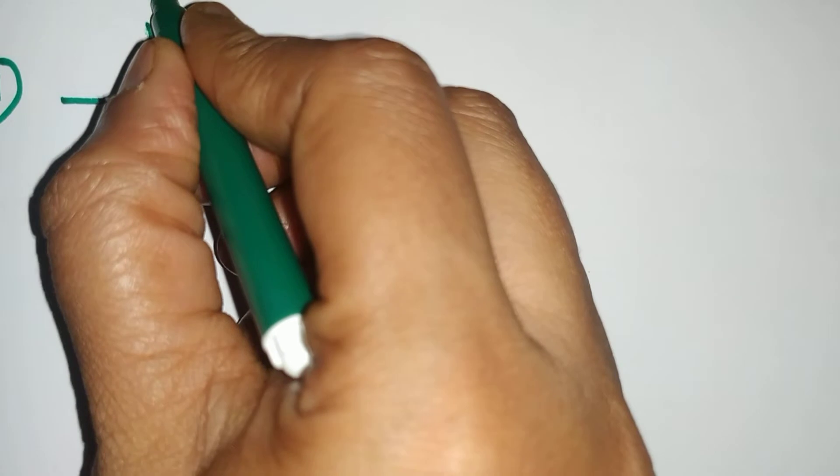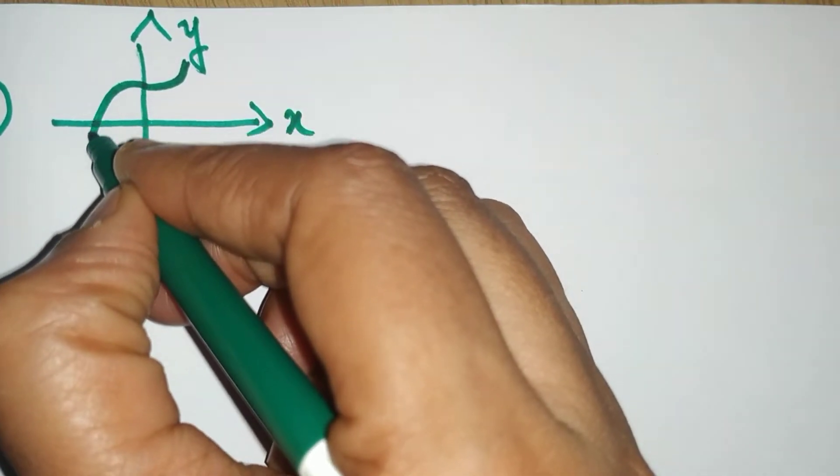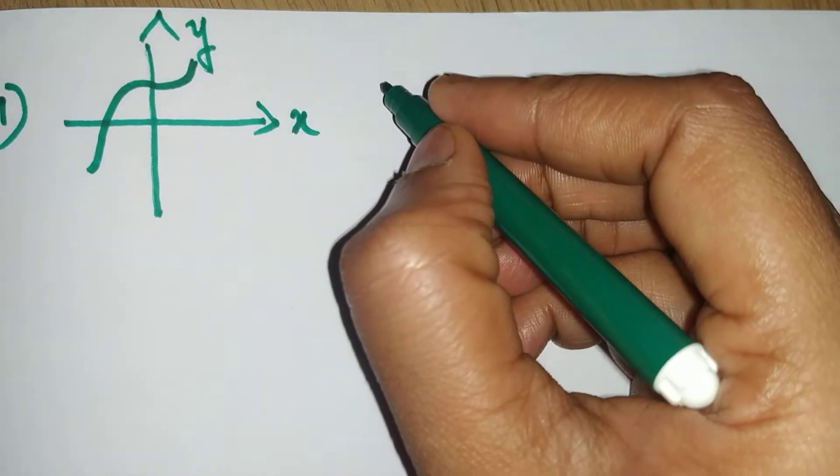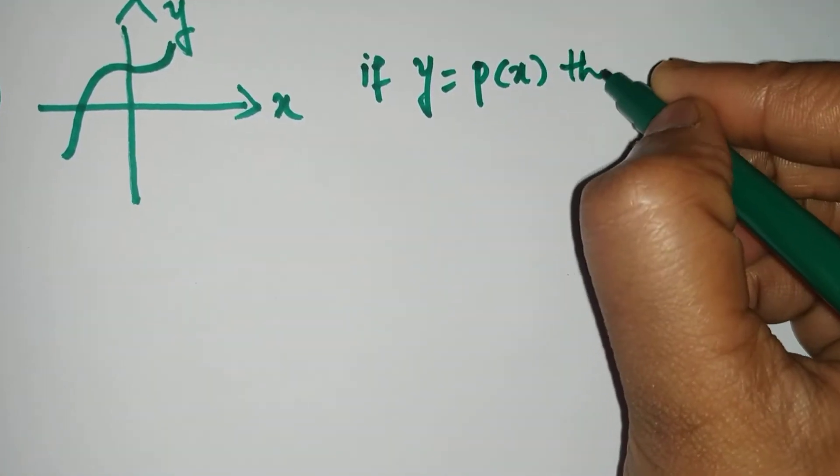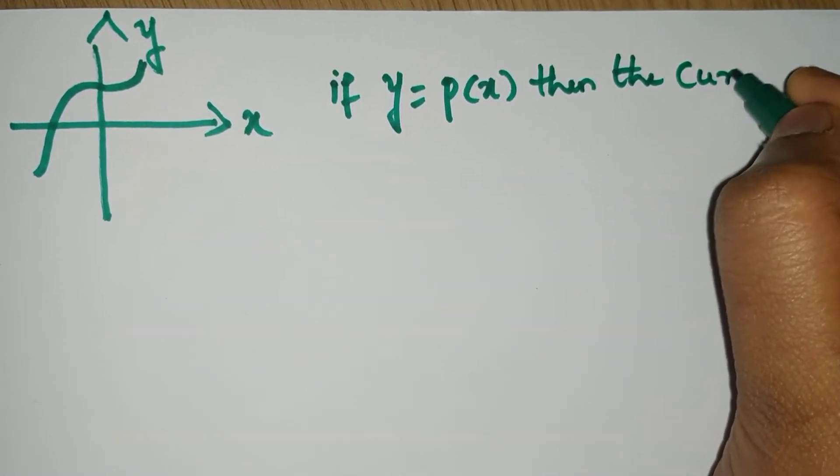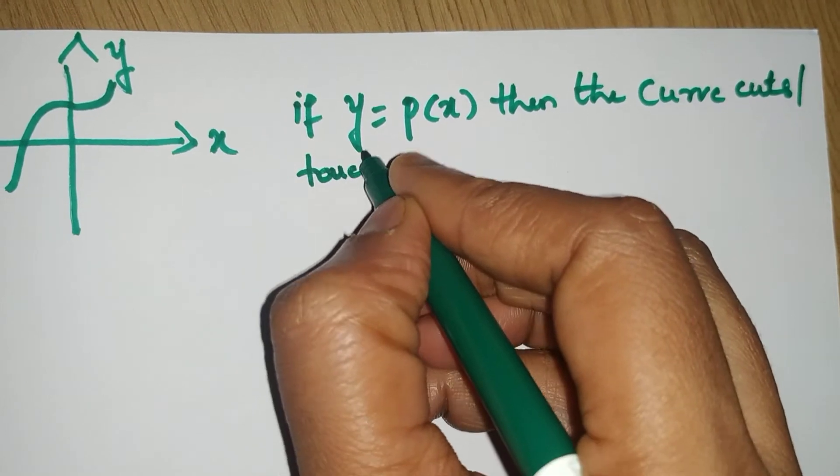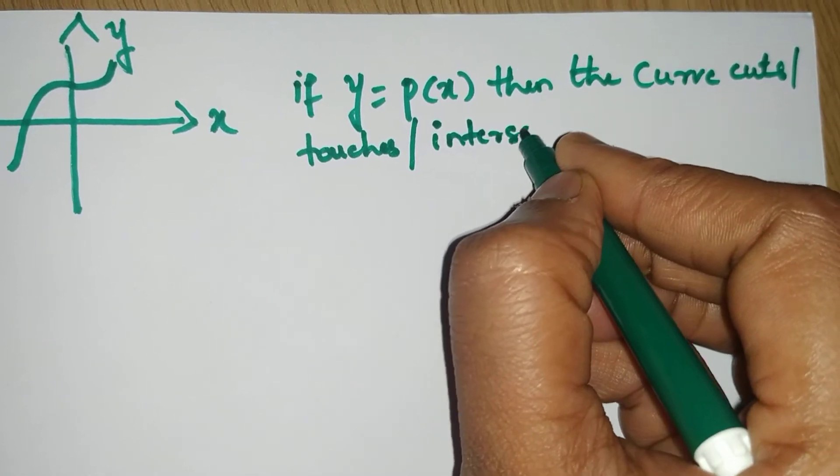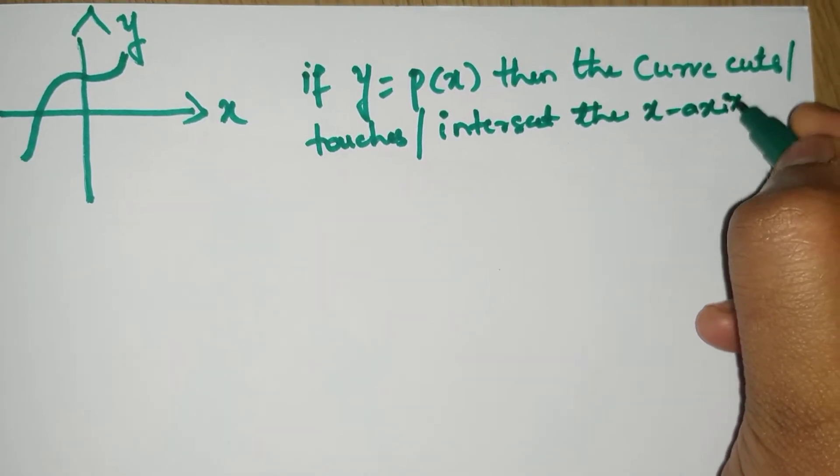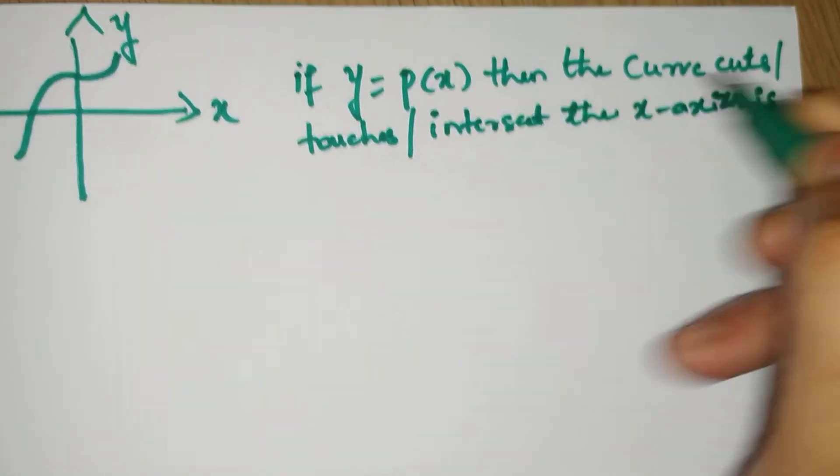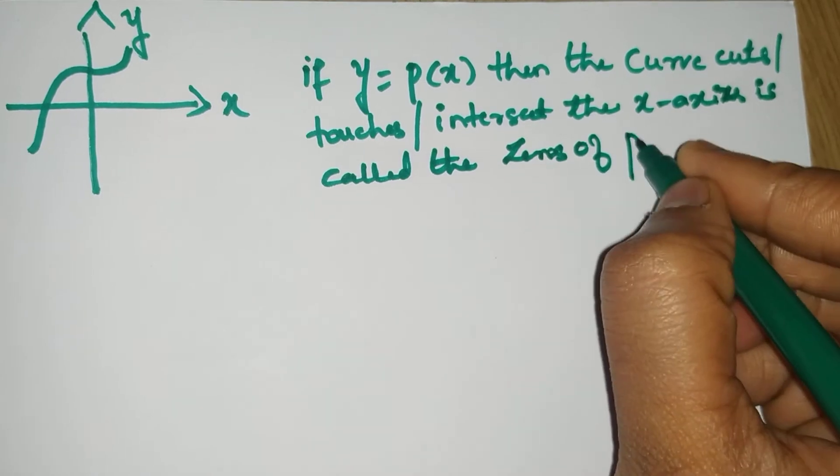Consider the curve along x and y axis. The curve looks like this. As I already stated, if y equals p of x, that is our polynomial, then the curve cuts or touches or intersects the x-axis. It is called the zeros of polynomial.